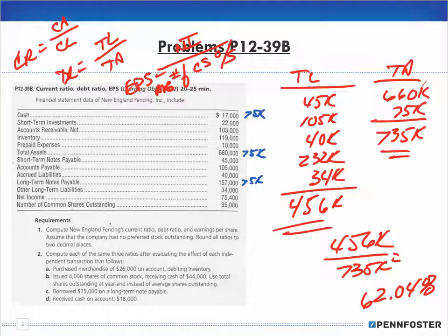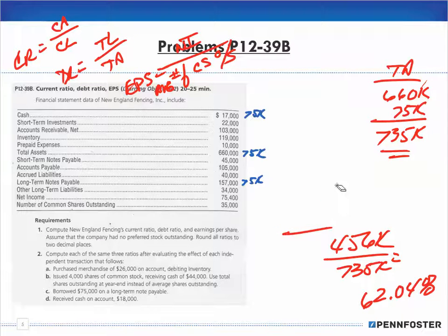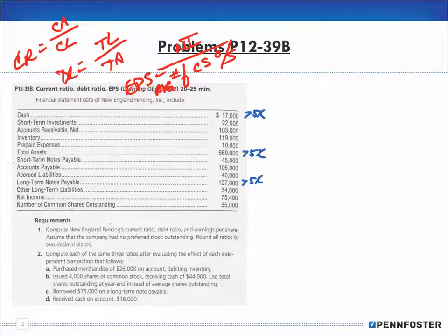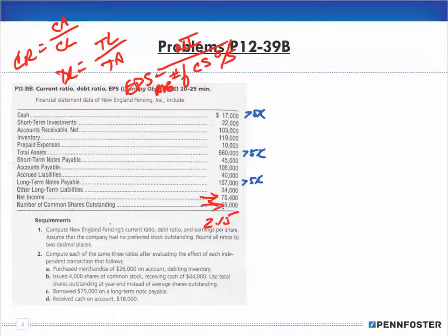This is just a lot of number crunching. If you know where the numbers come from, you can take shortcuts. For Transaction C, earnings per share didn't change because net income and shares outstanding were unaffected, so EPS stays at 2.15 — same as number one. No need to rework that.